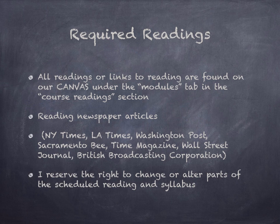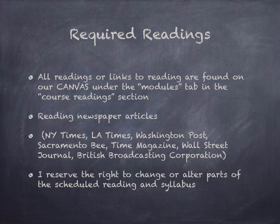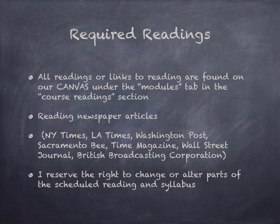I am committed to low-cost, no-cost reading options — so for this class it's no cost unless you choose to print your readings. All readings or links to readings are found on our Canvas site under the modules tab. On occasion you'll be asked to read newspaper articles, and I'm specific that you need to use one of the following: New York Times, LA Times, The Post, Sacramento Bee, Time Magazine, Wall Street Journal, or the BBC. Not all newspapers are equal, so I expect citations from these sites. I may occasionally change readings, but I will let you know well in advance.